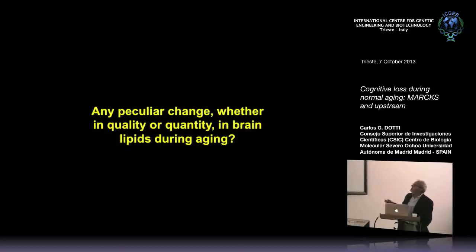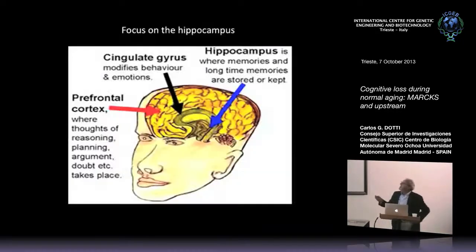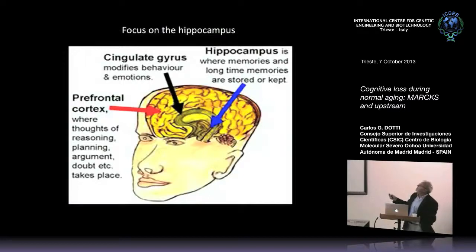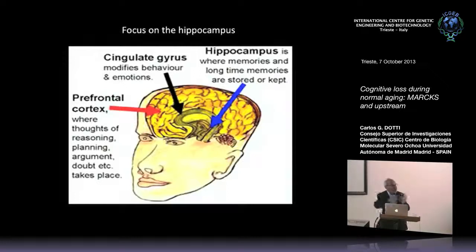These two series of evidence made us think that maybe during aging we had a problem with lipids. So we asked: does any peculiar change, whether in quality or quantity, in brain lipids occur during aging? We concentrated on the hippocampus — a structure where memories and long-term memories are stored and kept. We took this structure out of the brains of mice or rats at different ages and measured different lipids.